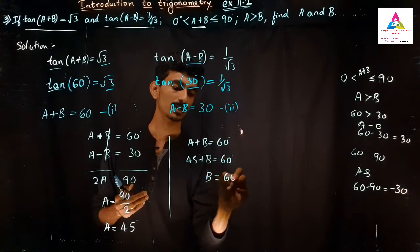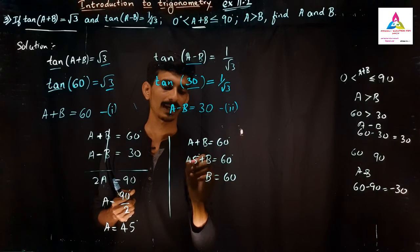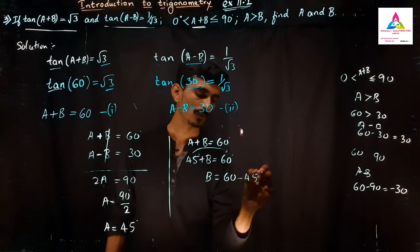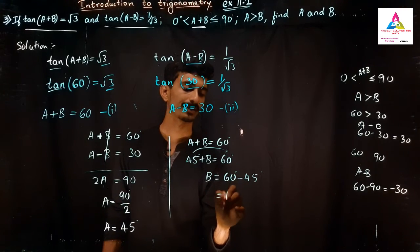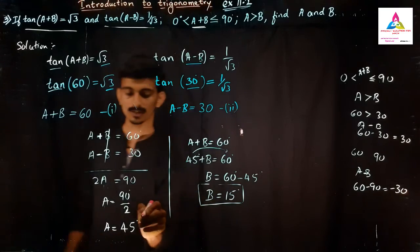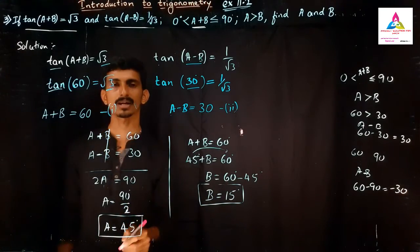So B is equal to 60 degrees. This 45 degrees what I have here, that I will shift it to the other side, it will be minus 45. So obviously 60 minus 45 is 15. So B value is 15. A value is 45, and this is our answer.